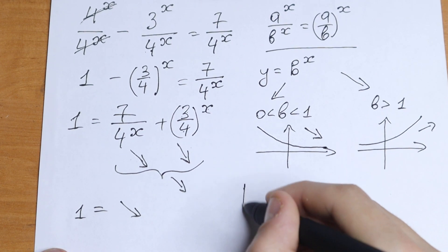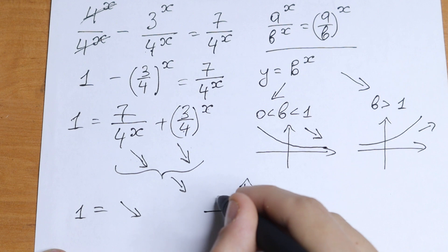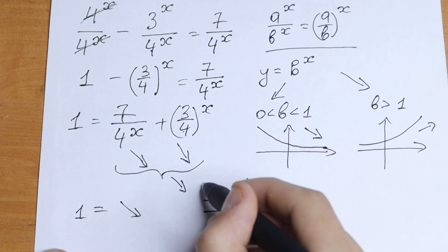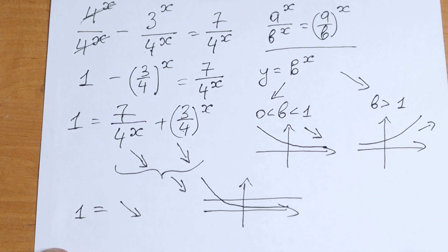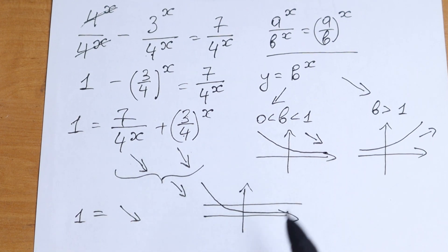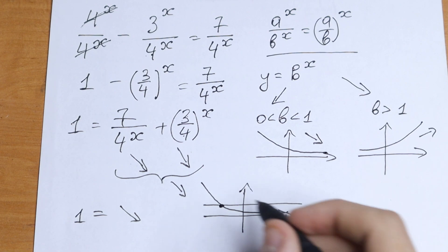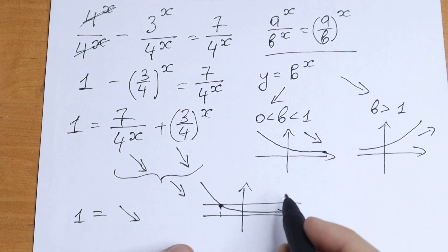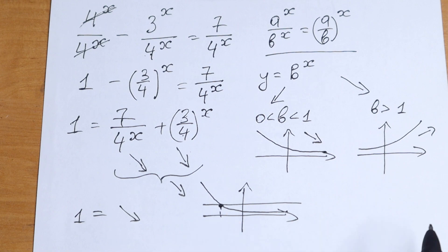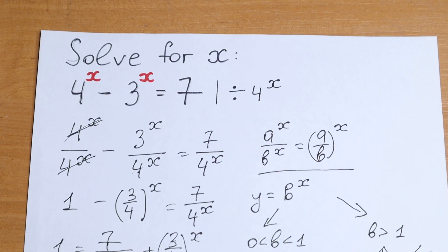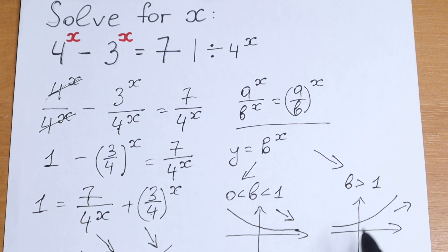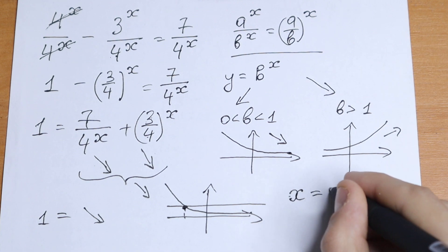If we draw a graph, we have a constant equal to a decreasing function. The one and only case this equation works is when the two graphs intersect in exactly one point — because a decreasing function and a constant can intersect at most once. So we have only one root. Going back to our equation, it's not hard to see by inspection that x equals 2.